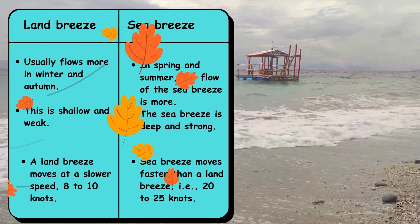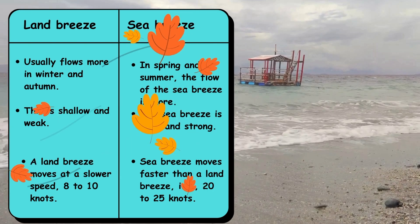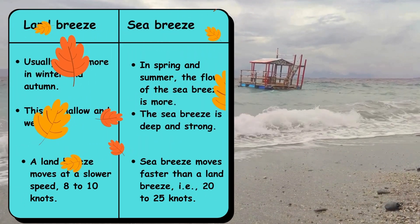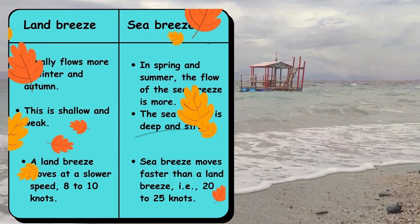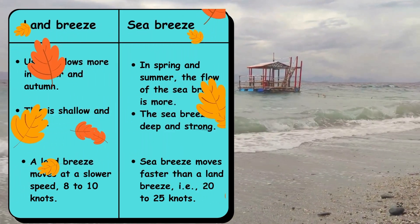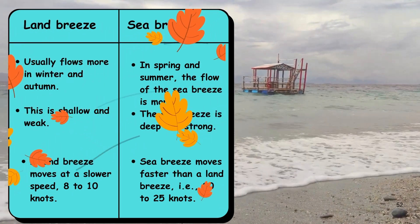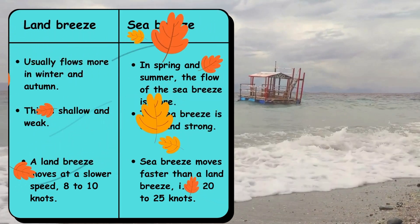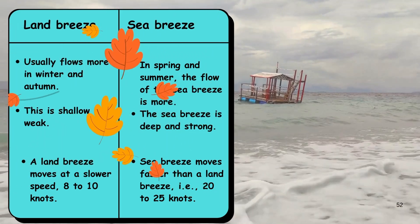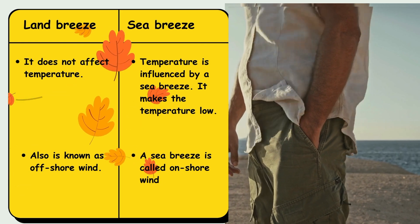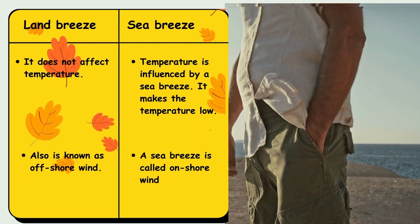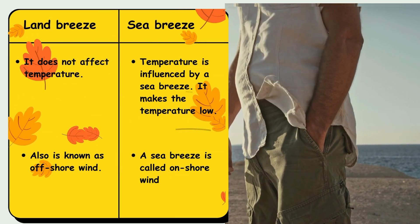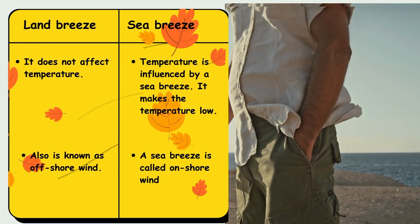Land breeze usually flows more in winter and autumn — it is shallow and weak, moving at a slower speed of 8 to 10 knots. Sea breezes flow in spring and summer — they are deep and strong, with sea breeze moving faster at 20 to 25 knots. Land breeze does not affect temperature and is also known as offshore wind, whereas sea breeze affects temperature and is called onshore wind.